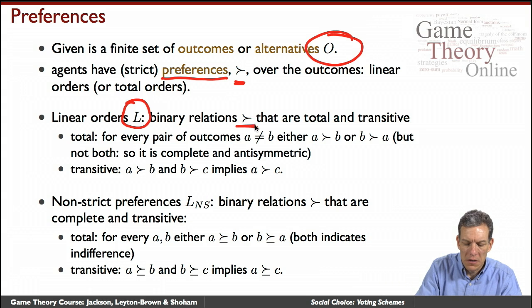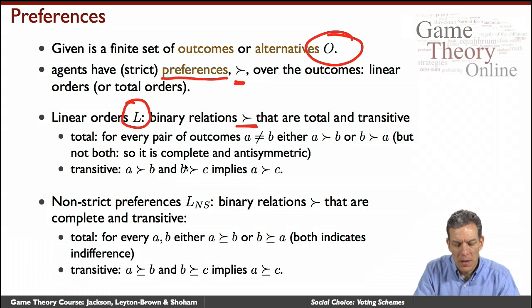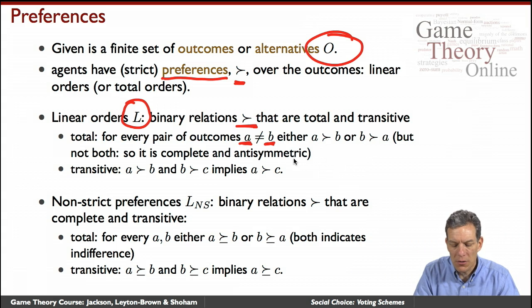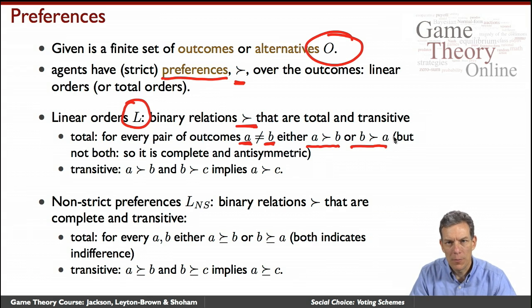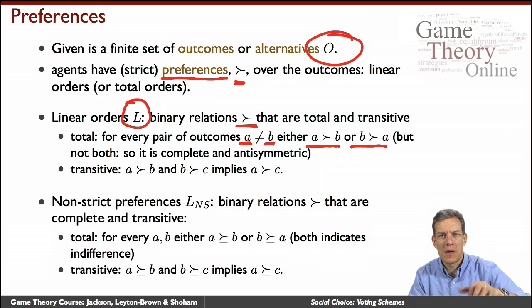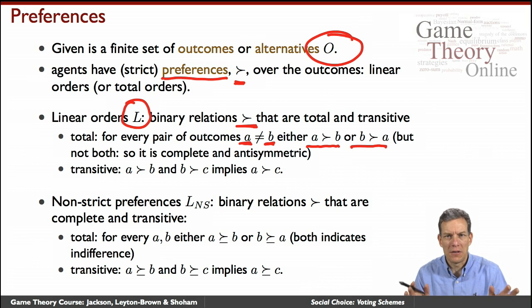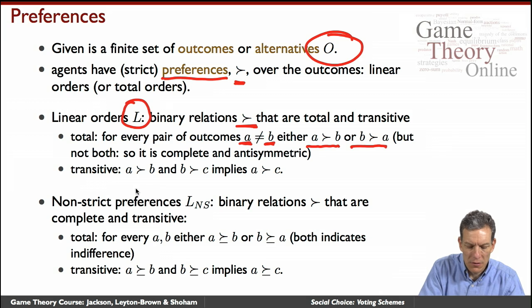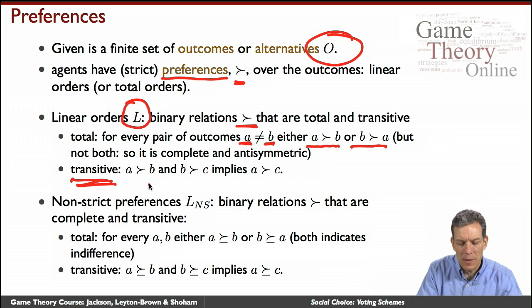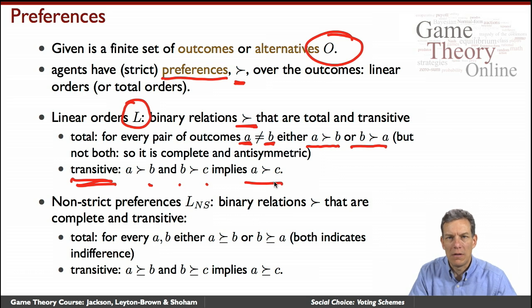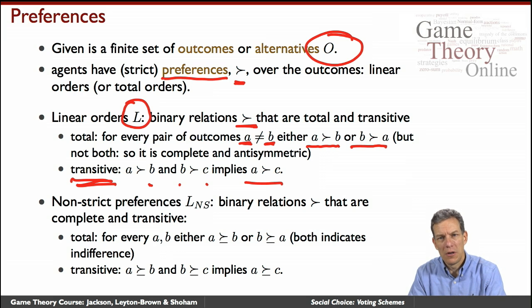Linear orders are binary relations which are total and transitive. That means for any two alternatives A and B that are not equal, either A is preferred to B or B is preferred to A, but not both. So I can always tell you which of the two I prefer, and I'm never indifferent. For any two alternatives, I can always make a comparison. And preferences are also transitive: if I like A better than B and B better than C, then I better like A better than C.